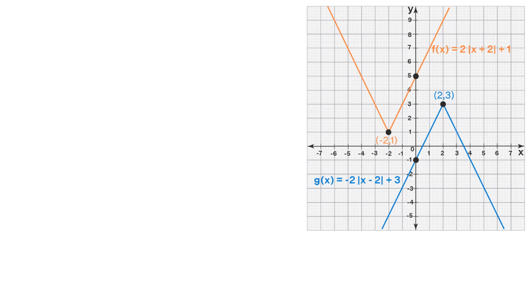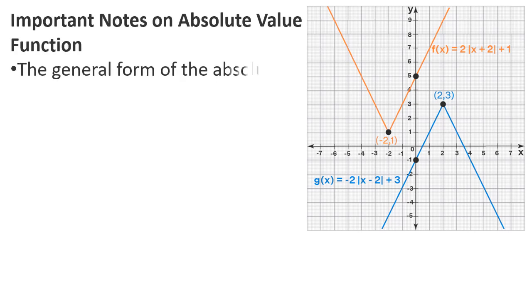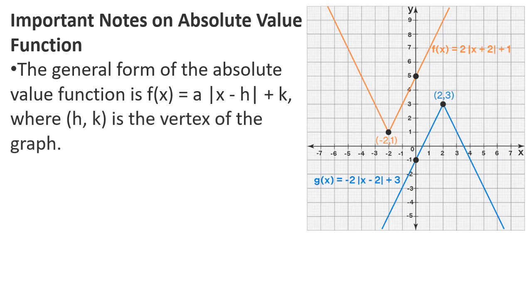We have two important absolute value functions. The general form of the absolute value function is f of x equals a into mod of x minus h, plus k, where h and k is the vertex of the graph. We need to consider the vertex of the graph using this formula.